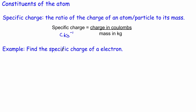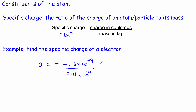Let's find the specific charge of an electron. The charge in coulombs of one electron is negative 1.6 times 10 to the minus 19 coulombs, and we divide by the mass of an electron, which is 9.11 times 10 to the minus 31 kilograms. If you do that on your calculator, you get approximately 1.8 times 10 to the 11 coulombs per kilogram to two significant figures. It's interesting to note that of all the components of an atom, the electron has the largest specific charge — that's often a question in an exam.